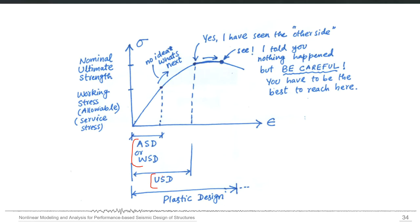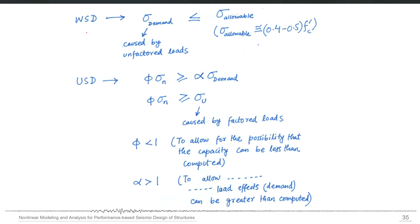So we started with allowable stress design or working stress design, and then moved to ultimate strength design where we are almost using the full capacity of the material. In working stress design the simple equation is that demand should be less than allowable, and that allowable is a fraction — some 40–50% — of the actual capacity. In ultimate strength design we apply a separate reduction factor to the capacity side and a separate load factor greater than one on the demand side.